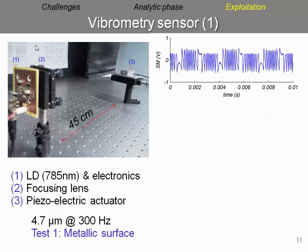Here's one example of vibrometry that we proposed. We have a laser diode emitting at 785 nanometers with associated electronics. We have the focusing lens, so no more optical or electronic components in this setup. As a target, we're using a piezoelectric actuator vibrating at 300 hertz and 4.7 micrometers of amplitude.